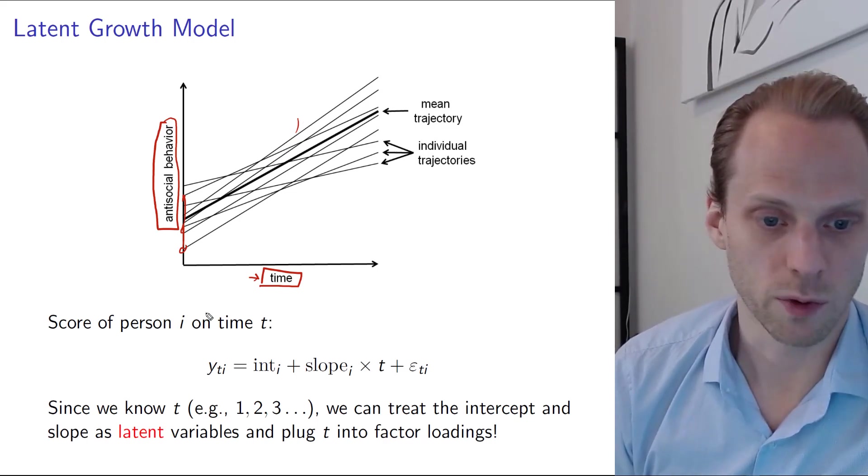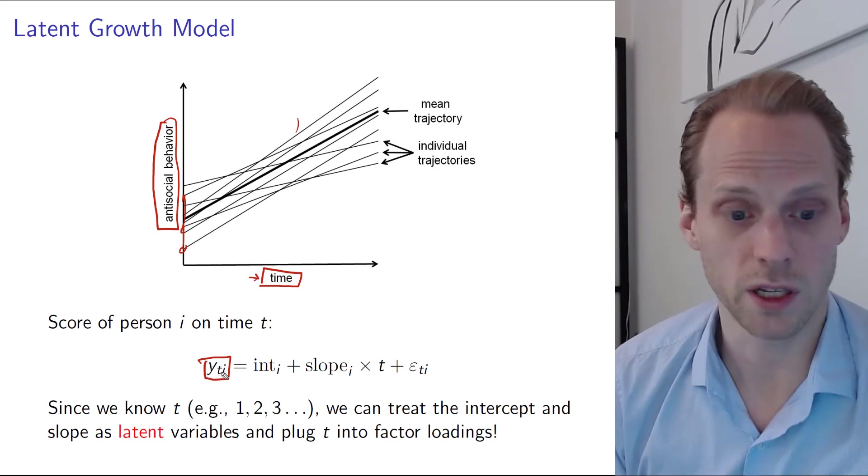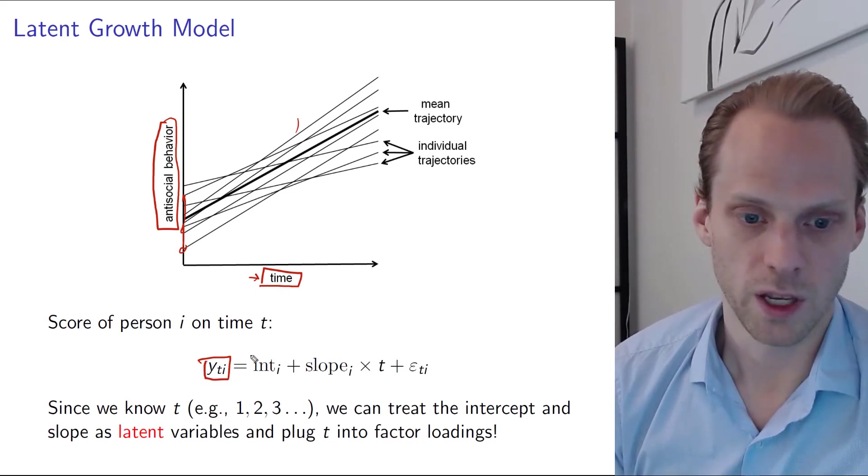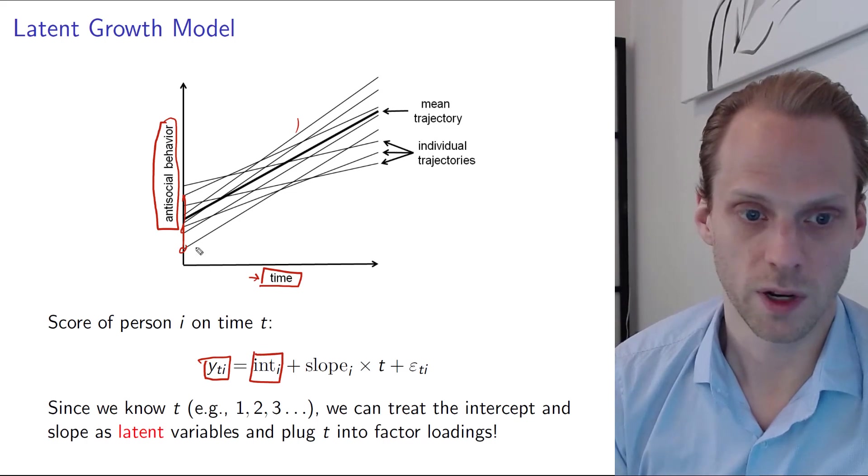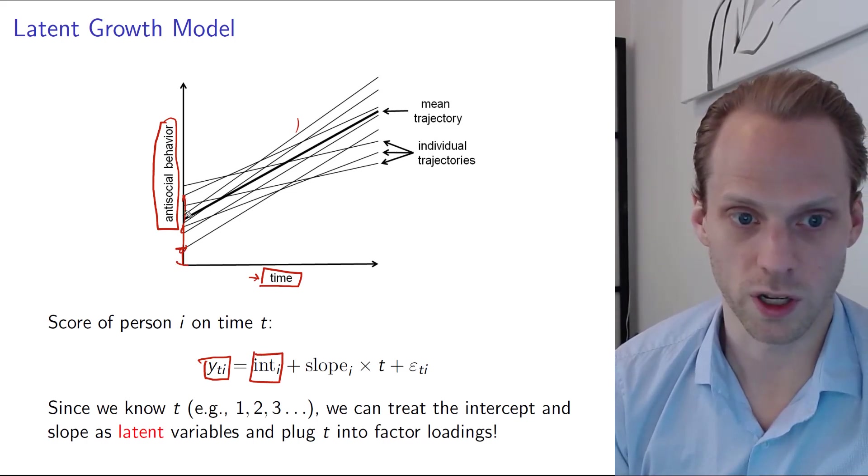So this we can interpret as a regression on time. We have the thing we measure, the time point t for person i equals an intercept, and that's the starting point here. So this controls the height of the line, the individual line.